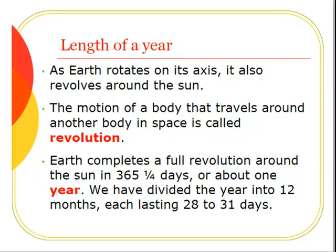As Earth rotates on its axis, it also revolves around the Sun. The motion of a body that travels around another body in space is called revolution. Earth completes a full revolution around the Sun in 365 and a quarter days, or about one year. We have divided the year into 12 months, each lasting 28 to 31 days.